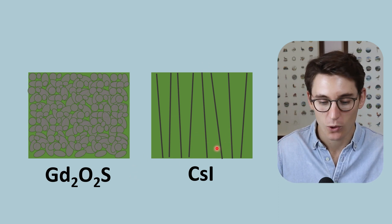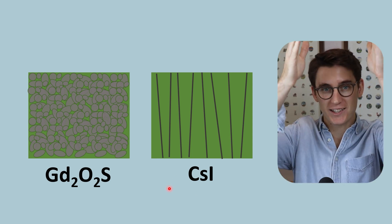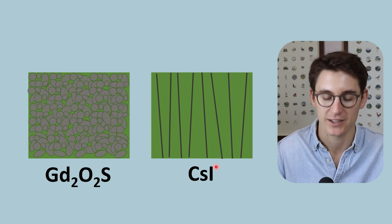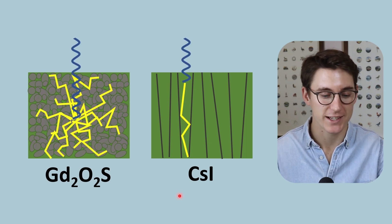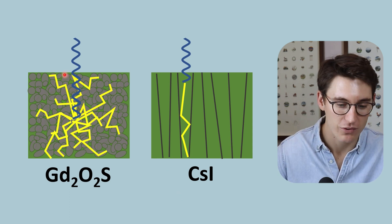Now in digital radiography we use cesium iodide. Cesium iodide is created in these long tubular crystal structures. We get these columns of cesium iodide here. Now when an x-ray strikes our gadolinium oxysulfide, we get this isotropic release of light photons.